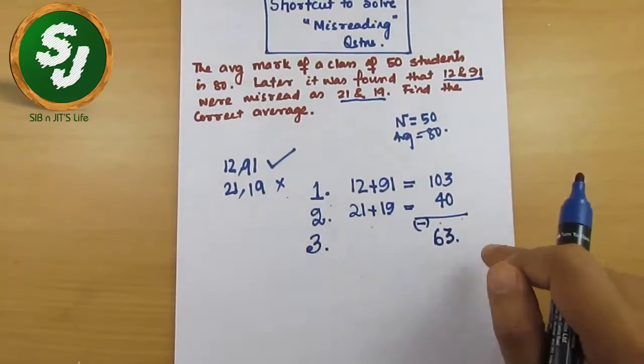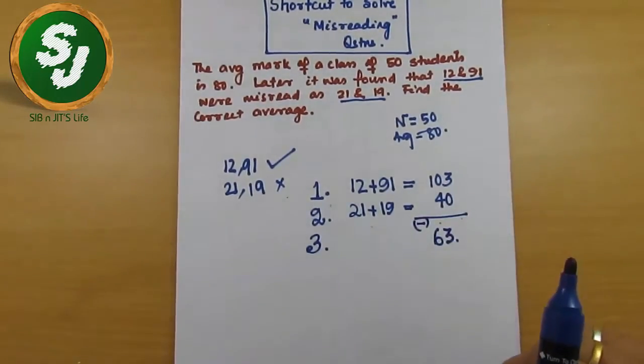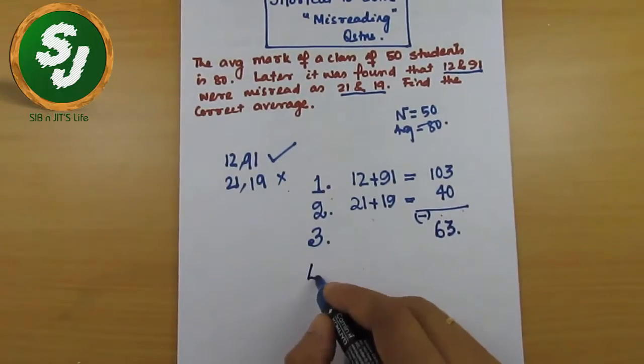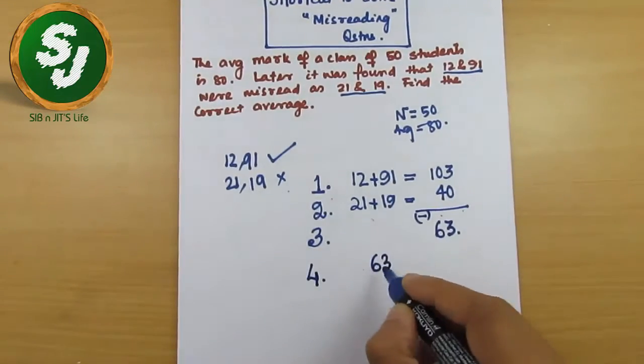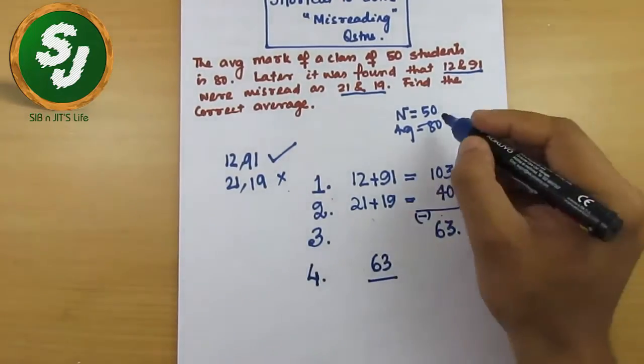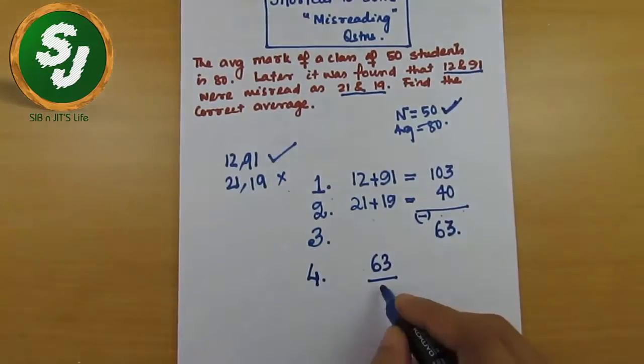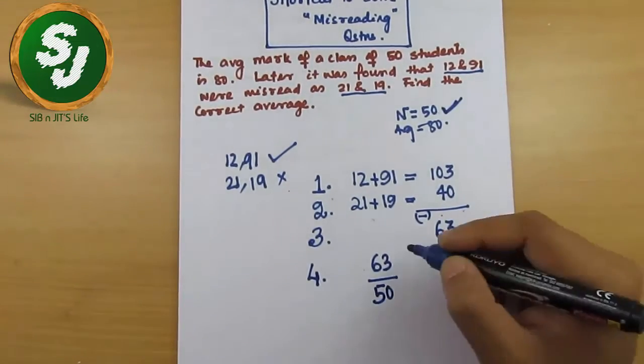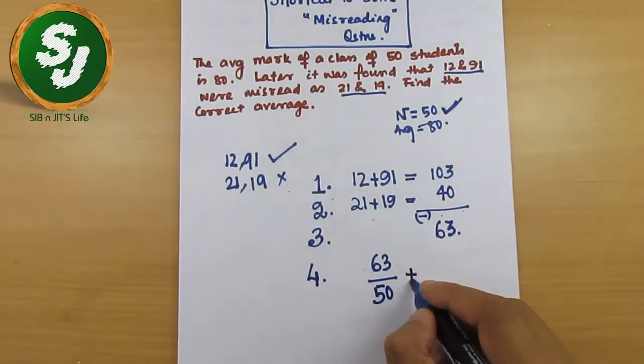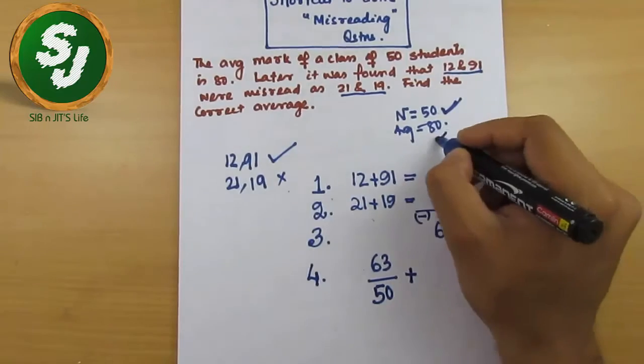In step four, what will you do? 63, this is your answer, divided by n. N is the number of students, so you will have to do this: 63 by 50, this is a factor that you have to find out, and plus the average what is given in the question, plus 80. This is your new average.